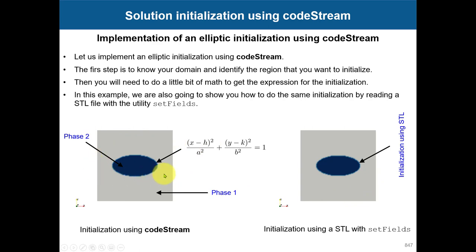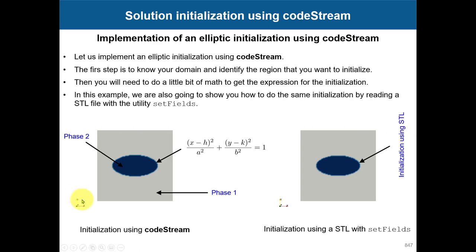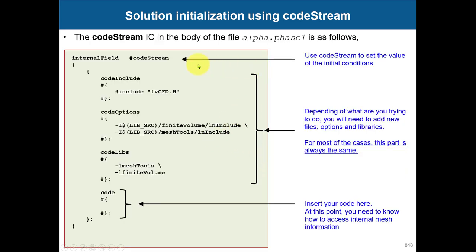For instance, let's say you want to apply an elliptical boundary condition. You can do it using codeStream like this, or you can use setFields with an STL file and get the same output. It's up to you. Sometimes you might have a tricky initialization that you cannot generate with an STL, or you don't have access to the appropriate CAD tool, so you use codeStream.